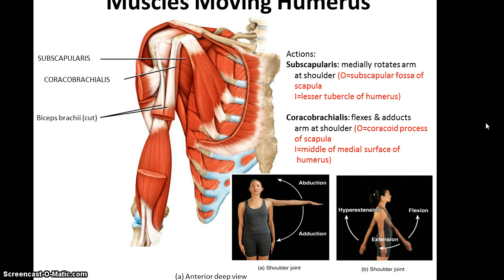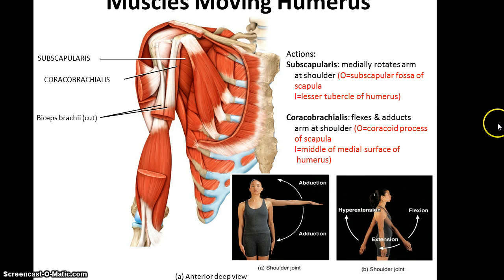And then the coracobrachialis, located here deep to the biceps brachii. Its origin is the coracoid process of the scapula, and its insertion is the middle of the medial surface of the humerus.